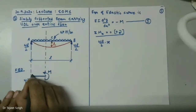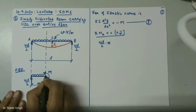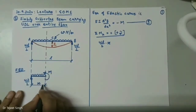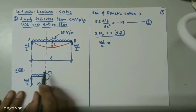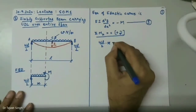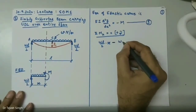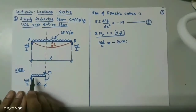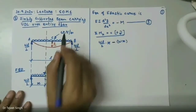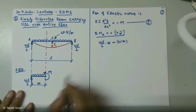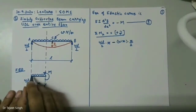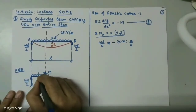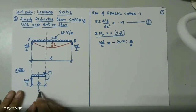On this beam segment, there will be a UDL acting over distance X. This UDL acts downward, so it will rotate the beam in an anticlockwise direction, making the bending moment negative. The total force is W into X. On one meter it is W, so over X meters it is W·X, multiplied by the distance to its centroid X/2.